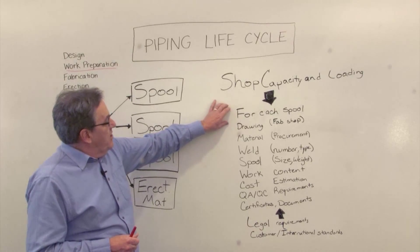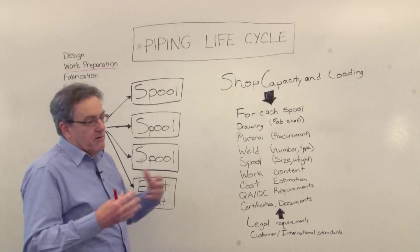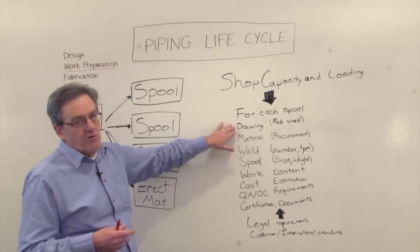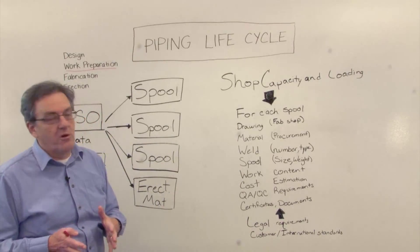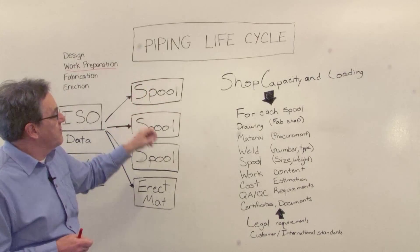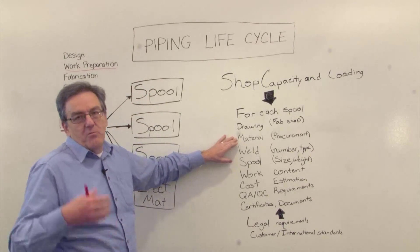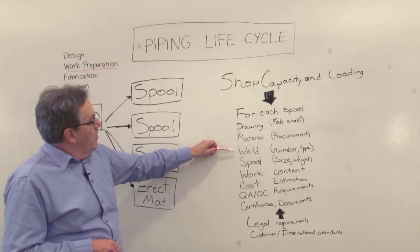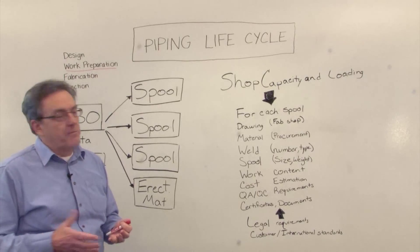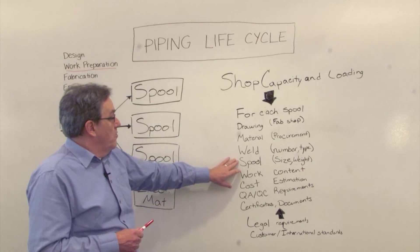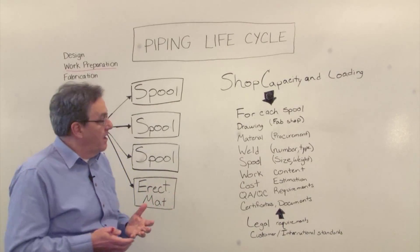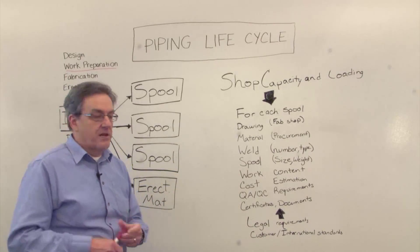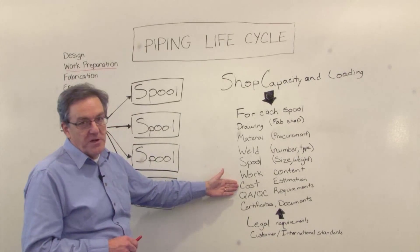Each spool is a unit that we're going to fabricate. You can think of the pipe shop as an assembly line and we need to do a number of things. First, we need a drawing that tells the people in the fab shop what they have to do — a drawing of that specific spool. We need material available at the right time and in the right quantities. We need to figure out how many welds we're going to have to do. We need to check that the spool is within size and weight limits. We might also want to calculate the work content to make that spool so we can use it in planning, and that might feed through into a cost estimate.